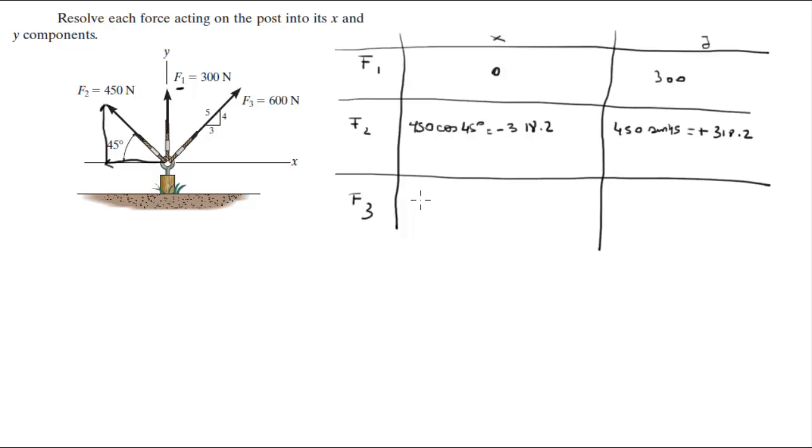And F3 is 600 on the X you multiply by 3 and divide it by 5, times 3 over 5, this comes out to be 360. And on the Y is 600 you multiply by 4 and divide it by 5, times 4 over 5, and that is 480.